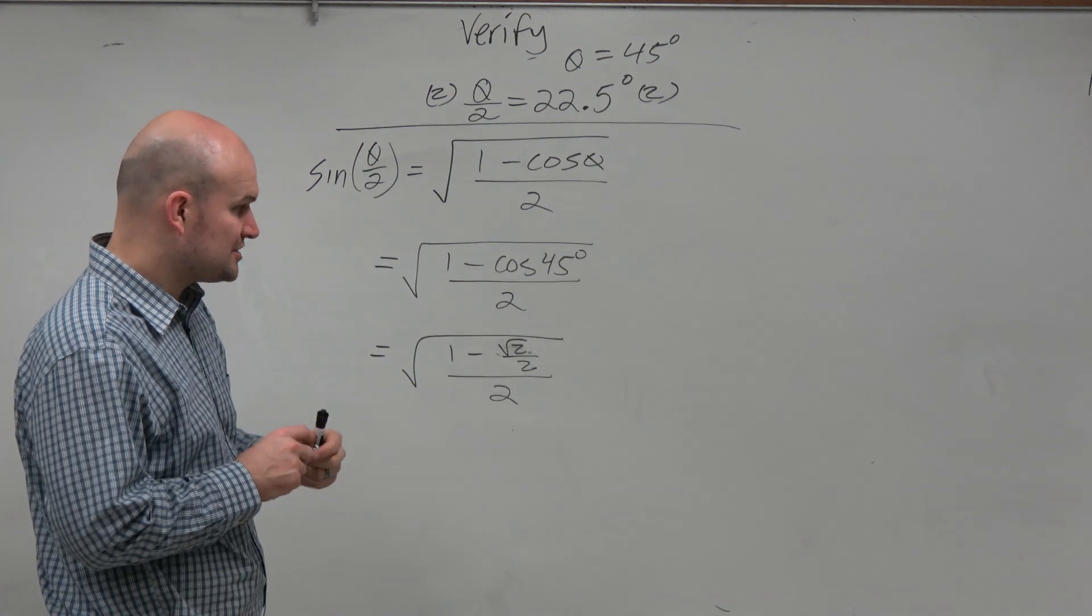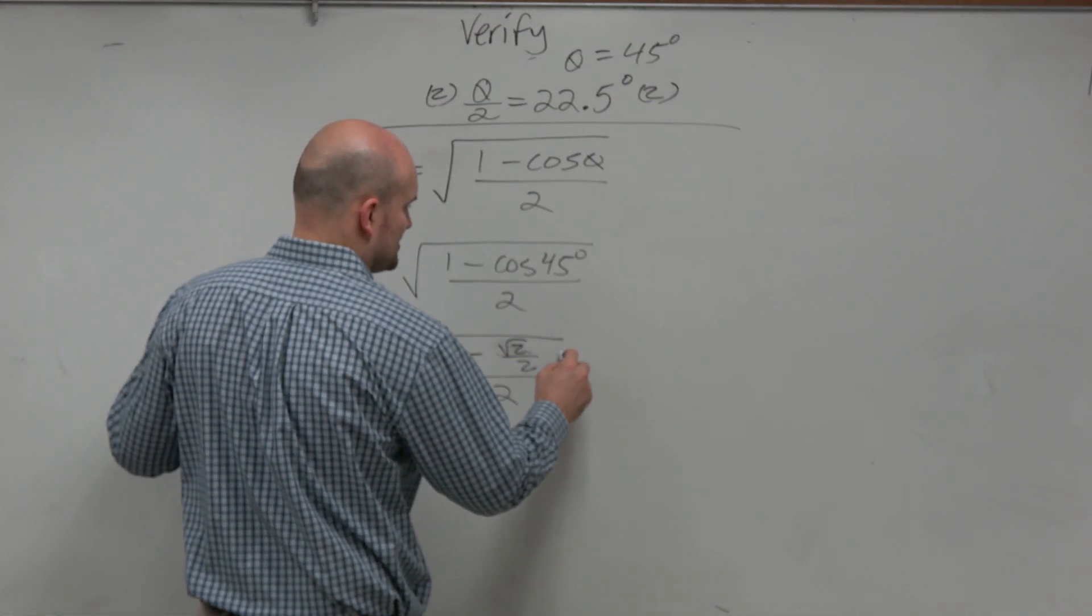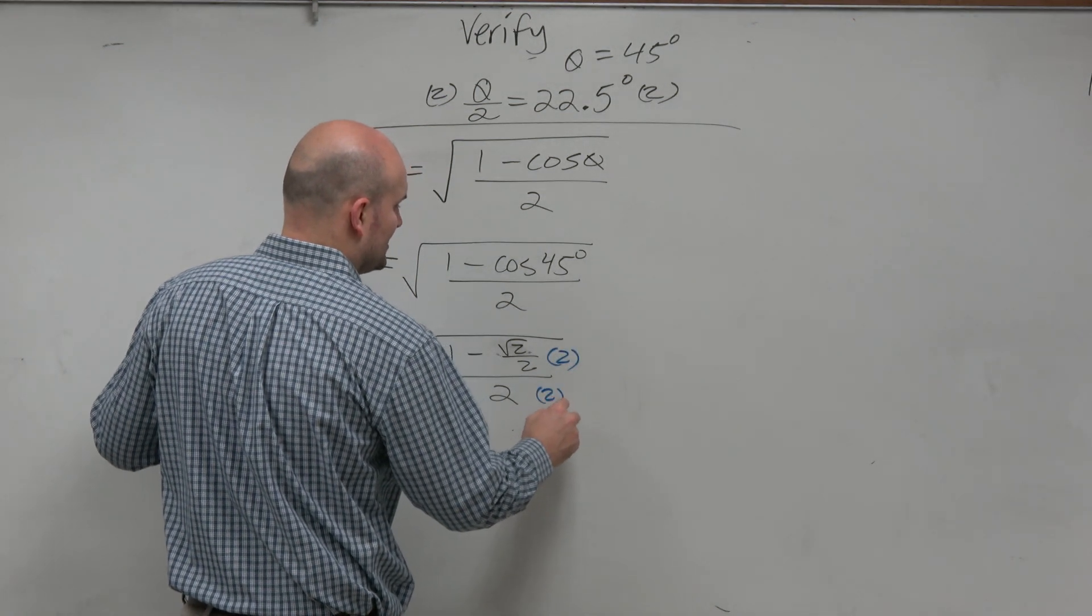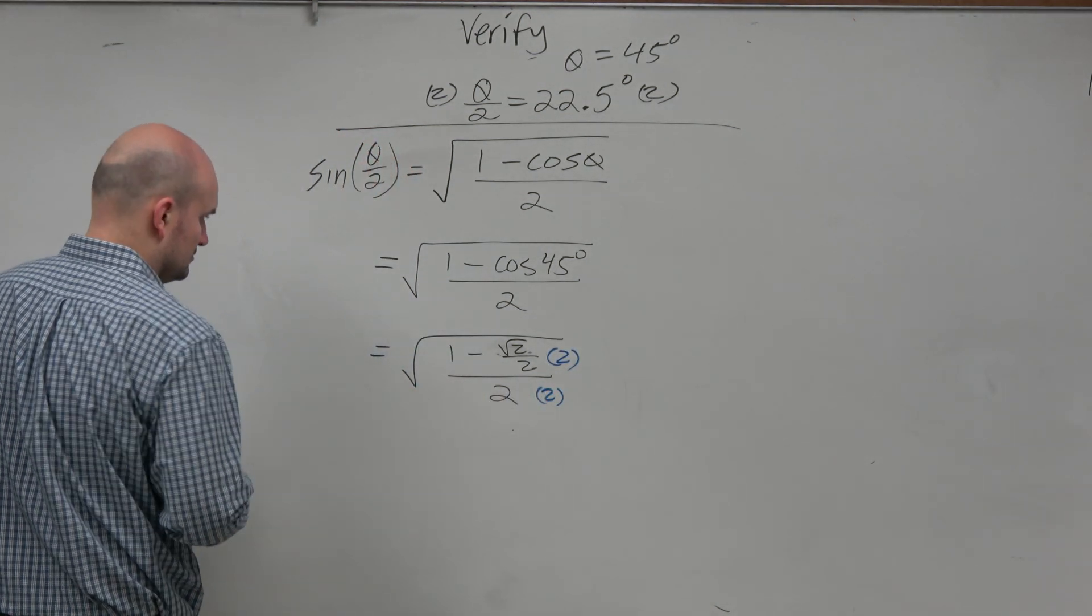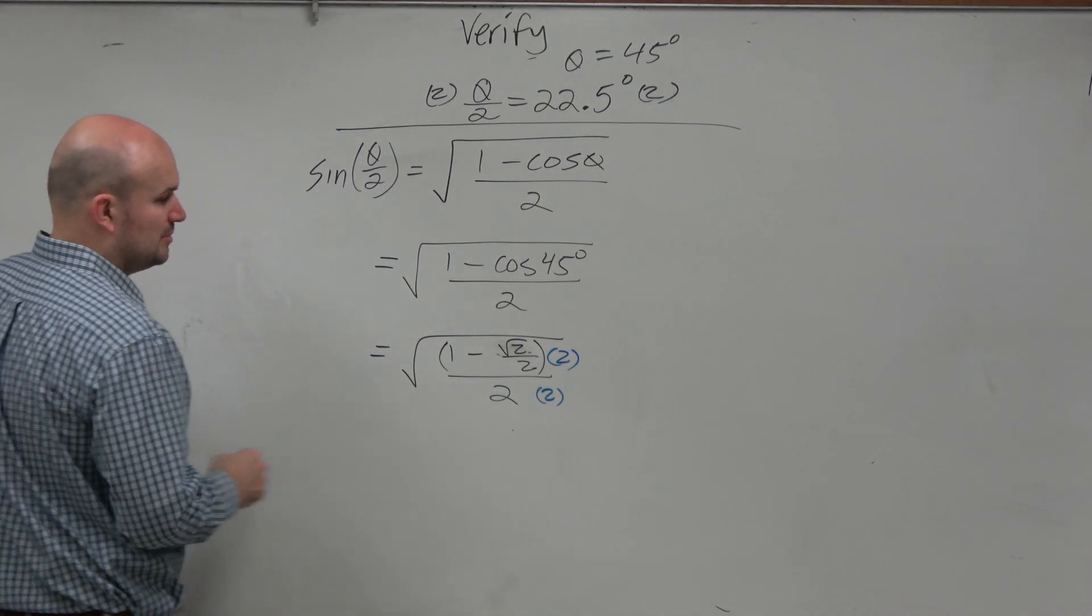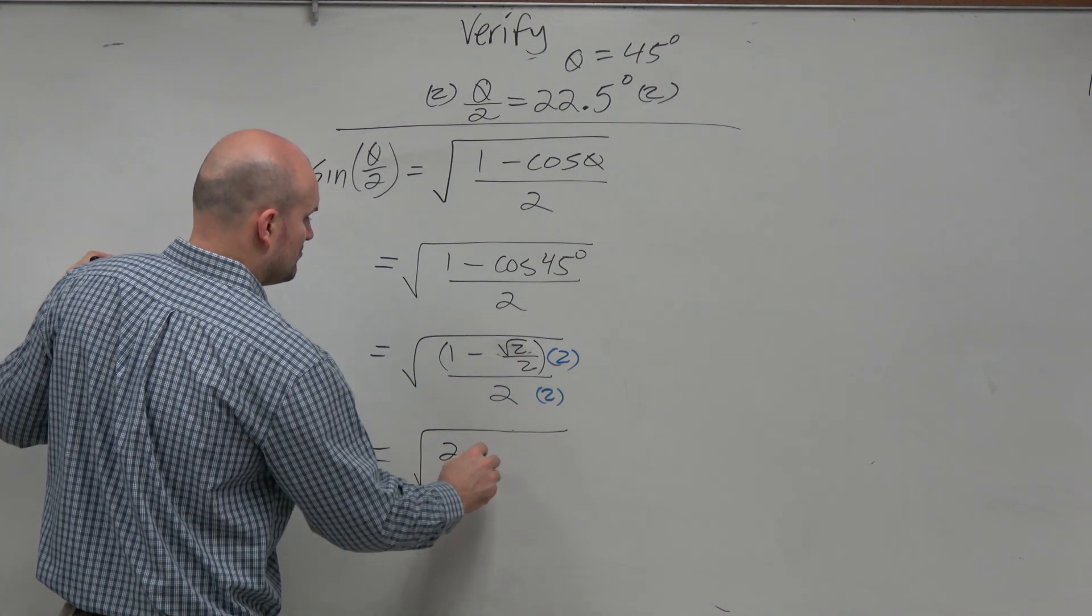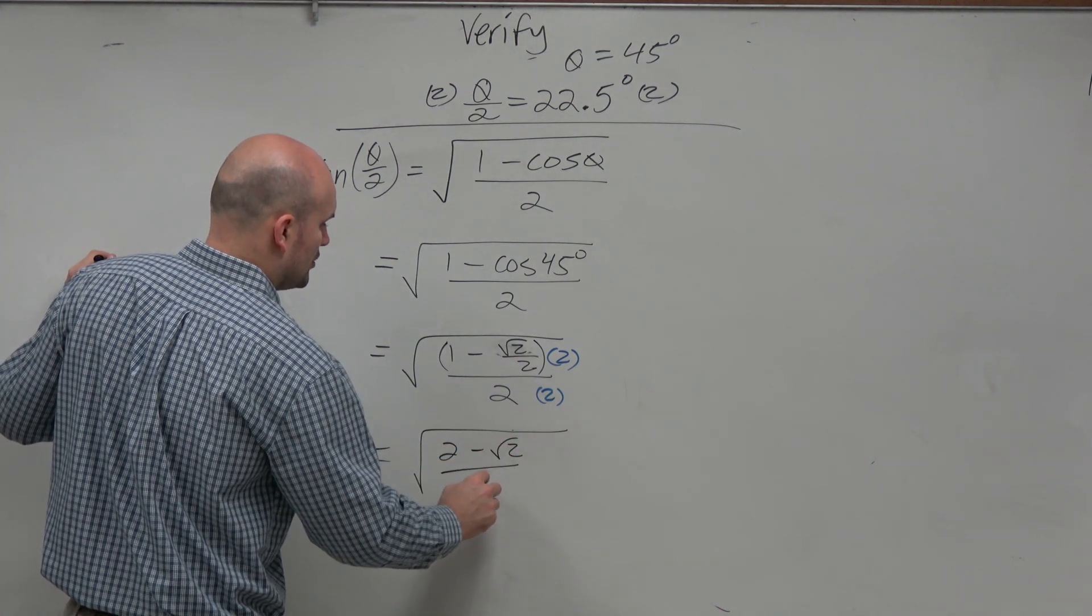So if you guys remember complex fractions, we have fractions within fractions. Let's get rid of all these extra fractions. I'll multiply by 2 on the top and bottom. When doing that, please make sure you apply distributive property. A lot of people forget this. So therefore, I get 2 minus the square root of 2 over 4.